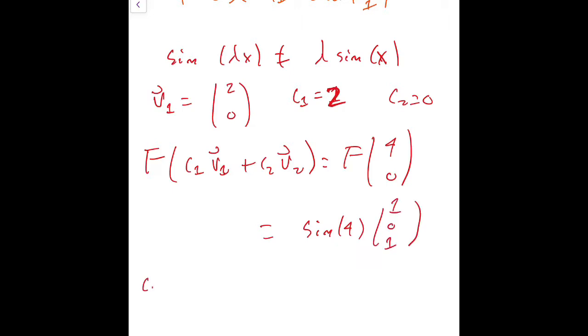Now, c1 F of v1 plus c2 F of v2. What is that? Well, c1 is 2, so this is going to be 2 F of the vector v1, which is (2, 0), plus 0, since c2 is 0. What is this? This is 2 times sine of 2 times (1, 0, 1).